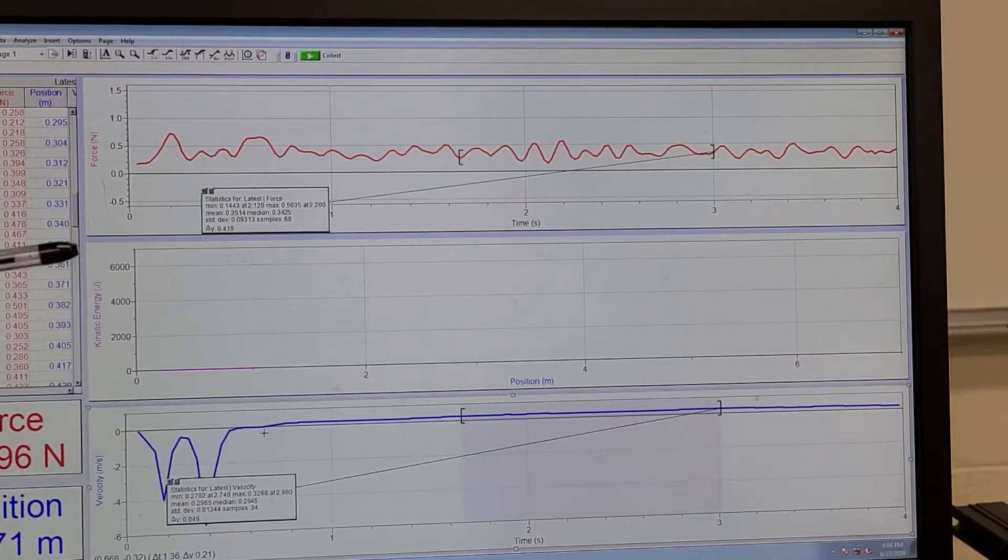The top graph is the force. The middle graph is kinetic energy, don't worry about it. I just left it up there because I'm going to need it at some point in the next activity. The bottom graph is the velocity.